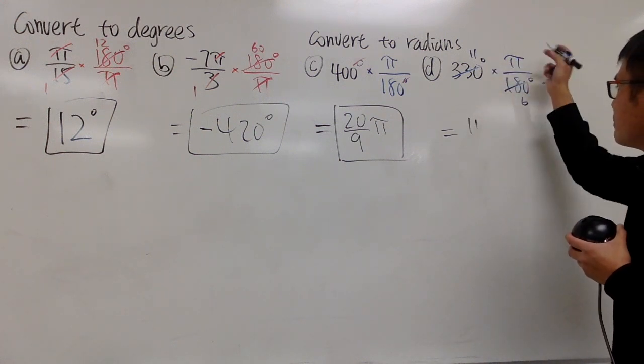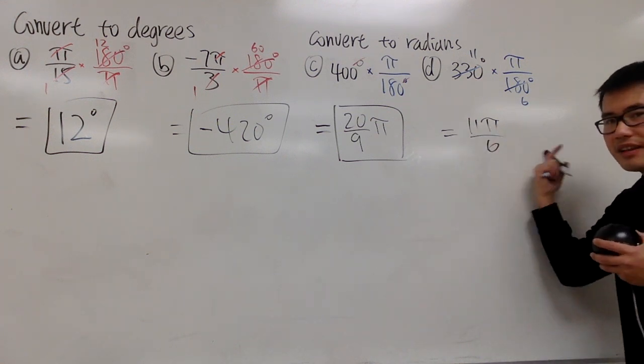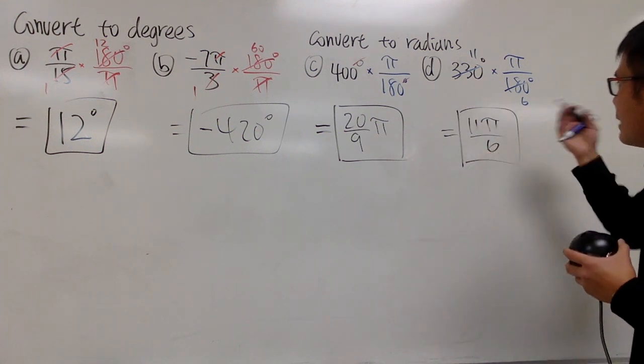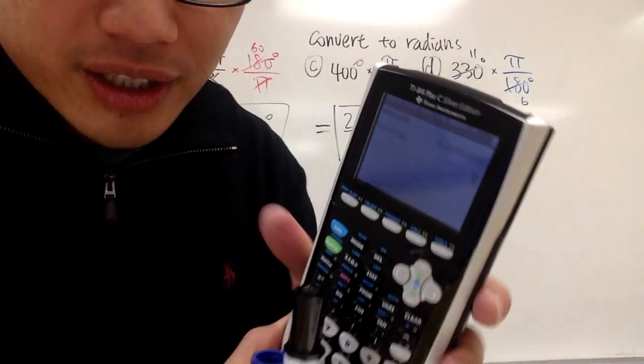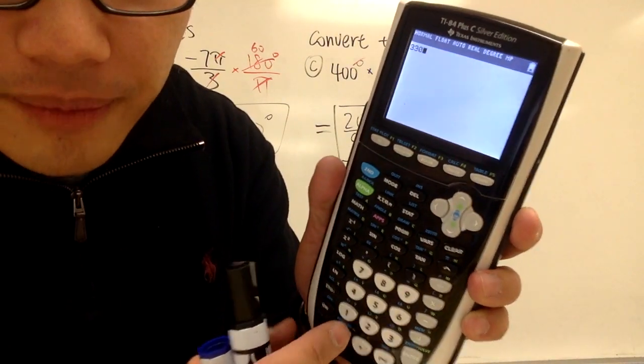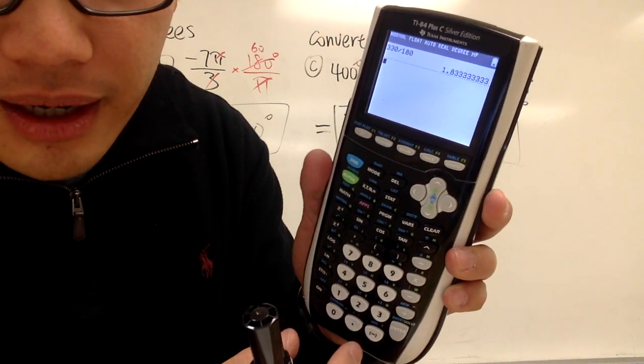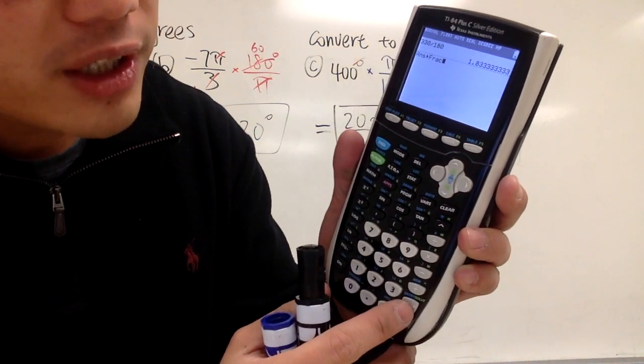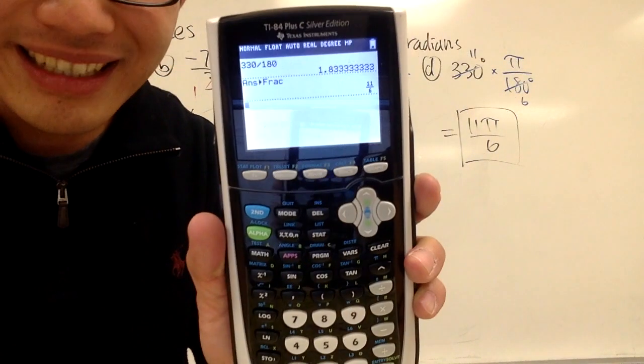So in the end, you get 11π over 6. You can put the π on the top or on the side, it doesn't really matter. So, 11π over 6, just like that. Well, just to check our answer, if you like, 330 divided by 180, enter, and then go to math, and then fraction, enter, and then you get 11 over 6. Just like that.